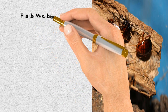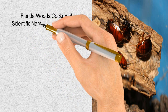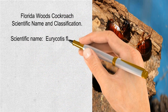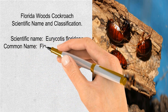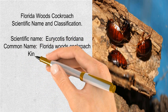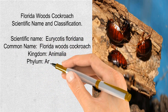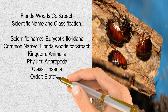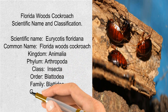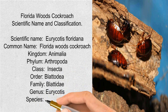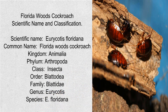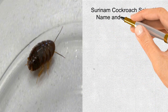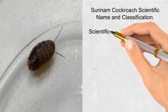Florida woods cockroach scientific name and classification: scientific name Eurycotis floridana, common name Florida woods cockroach, kingdom Animalia, phylum Arthropoda, class Insecta, order Blattodea, family Blattidae, genus Eurycotis, species Eurycotis floridana.